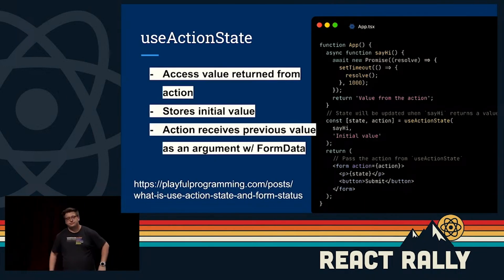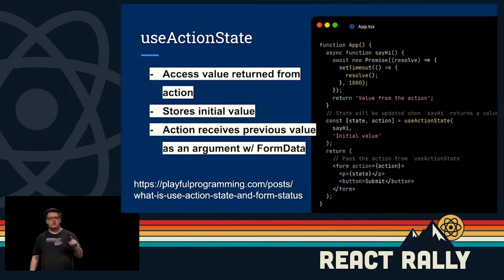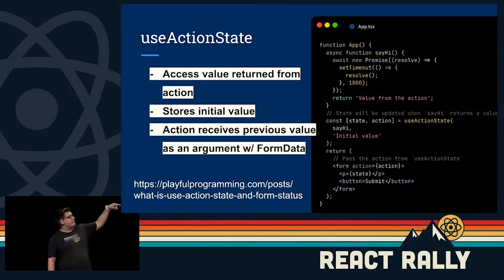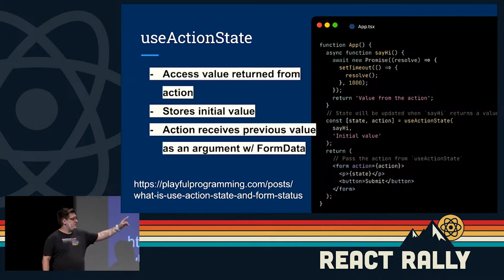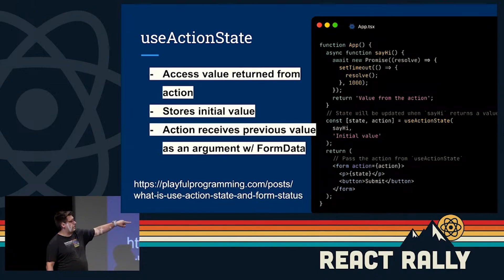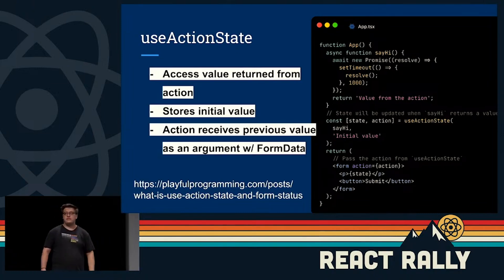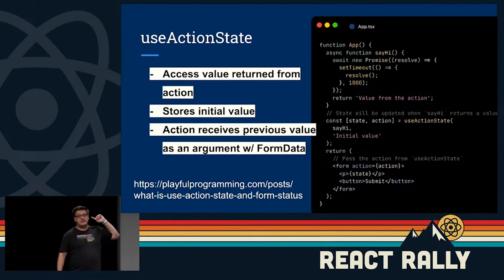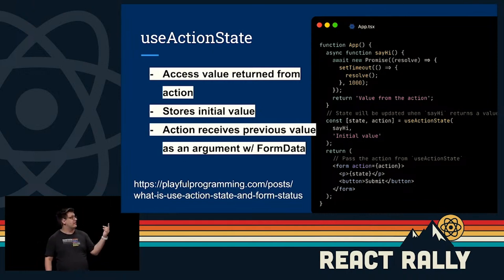Then we have useActionState. It allows you to pass an initial value, and then from that initial value, you can return updates to that state through your form action. Here we have a sayHi that returns a value from the action, and we wait a second before doing that. So when you hit submit, it will show the initial value, then wait that second and show the value from the action. You can even take previous state and add on to it — building a counter without any useState, which is pretty interesting.